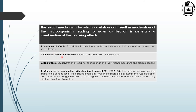Heat effects cause the formation of local hot spots with conditions of very high temperature and pressure. When cavitation is used in combination with chemical treatments like chlorine, H2O2, and O3, the intense pressure gradient improves the penetration of oxidizing chemicals through the microbial cell membrane. Cavitation also facilitates de-agglomeration of microorganism clusters.